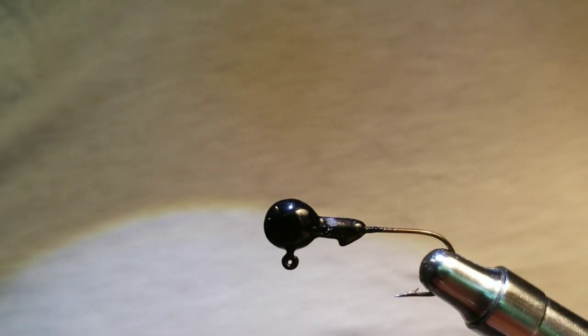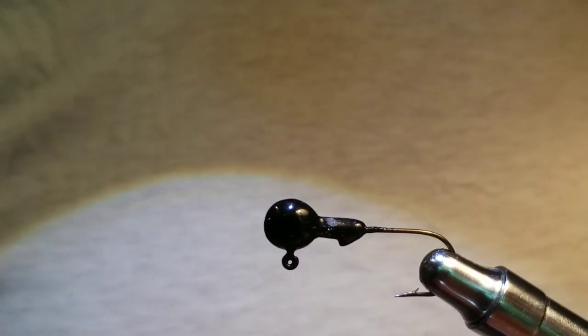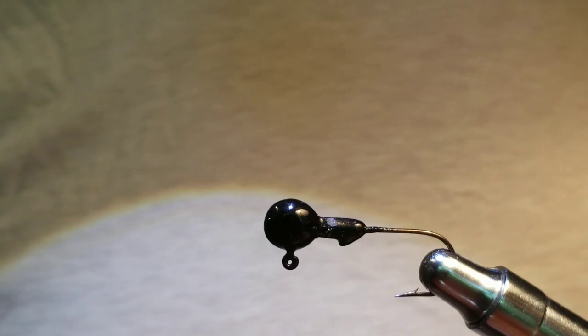Okay, so today we are going to be tying the Jim's Special Hair Jig. This is a bucktail jig that I saw on In-Fisherman TV that Doug Stange was using for smallmouth bass, and that's what this particular jig is going to be used for. It's a brightly colored jig and is meant to get their attention.